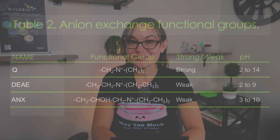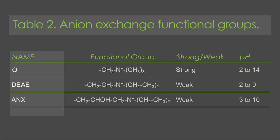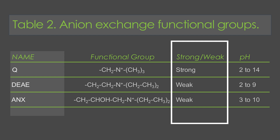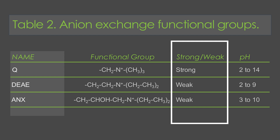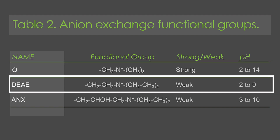Anion exchange resins bind negatively charged molecules using different functional groups. Let's take a look at some frequently used anion exchange resins. Like cation exchangers, anion exchangers can be strong or weak. Q columns are a strong anion exchanger and a frequently used choice. DEAE columns are an excellent choice for binding nucleic acids and are often used to purify DNA and RNA away from proteins.